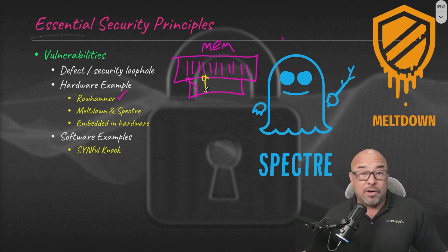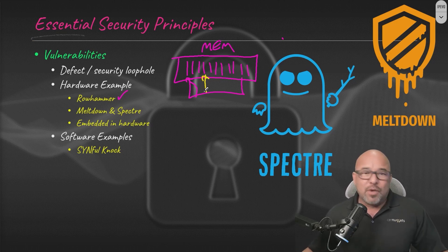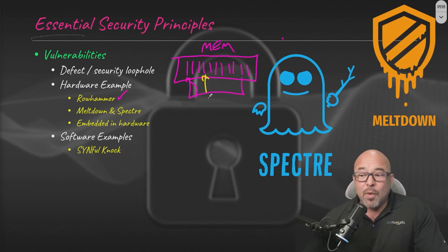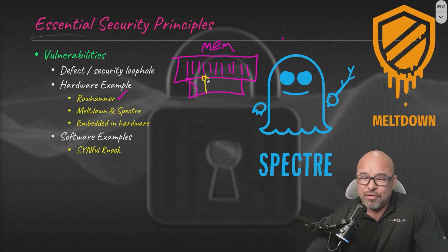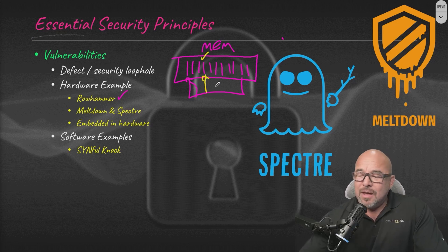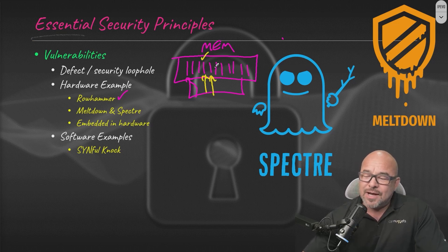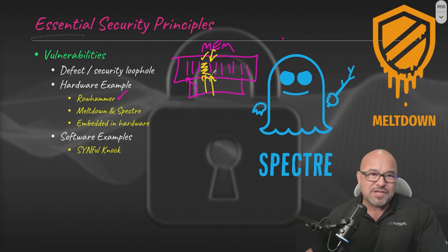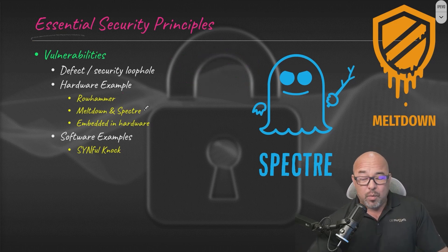It's all binary — something is turned on or off — and a combination of items turned on and off ultimately results in something, like the letter A or a graphic. Hackers have figured out a way using Rowhammer to corrupt data. They might exploit a cell next to valid data and hammer it — that's why it's called Rowhammer — hammering it with signals so fast and hard that it corrupts the adjacent data. That's an example of a hardware exploit.